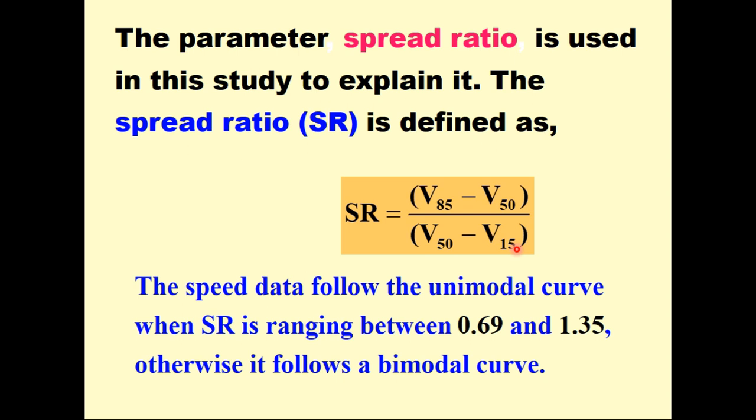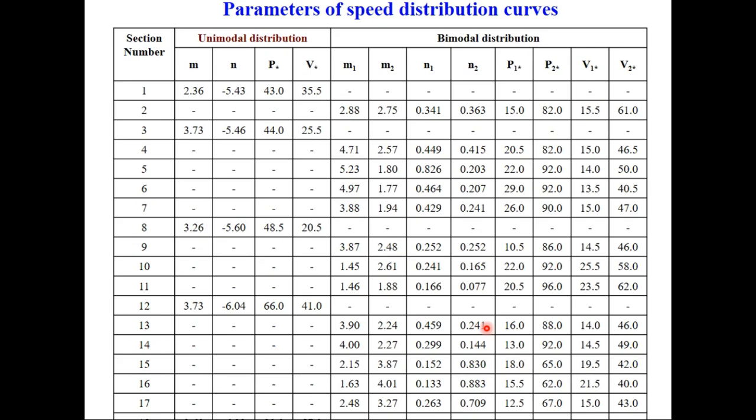What we observed after analyzing all 19 sections is that the speed data will follow the normal distribution curve or unimodal curve when this speed ratio or spread ratio is ranging between 0.69 and 1.35. If it is less than 0.69 then also it will follow a bimodal. If it is more than 1.35 then also it will follow a bimodal curve. If the value of spread ratio is between these two values then it will be a unimodal curve. Out of 19 sections selected only 5 sections followed unimodal data and on remaining 14 sections the data followed bimodal distribution.